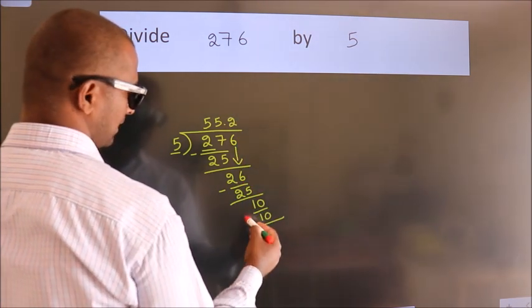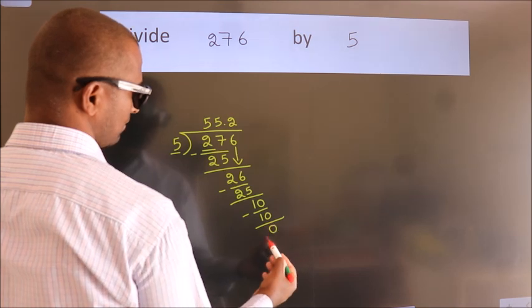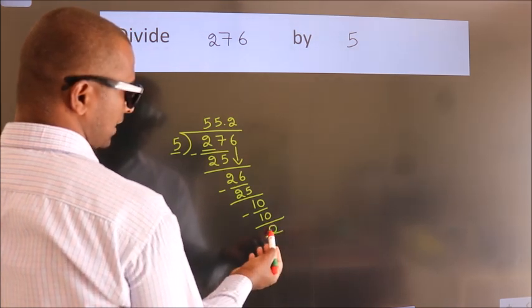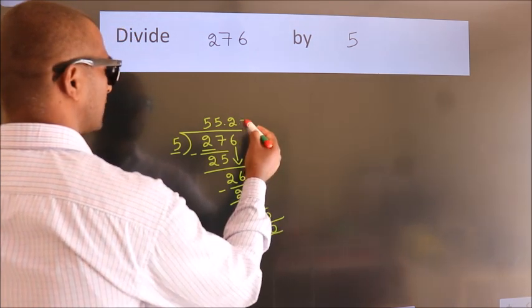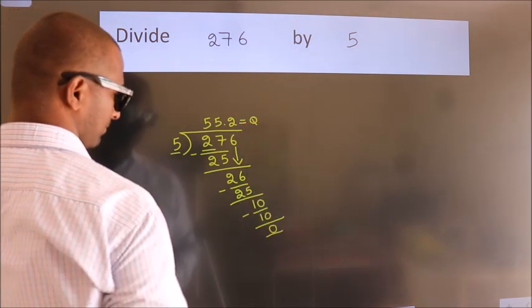Now we subtract. We get 0. We got remainder 0. So this is our quotient: 55.2.